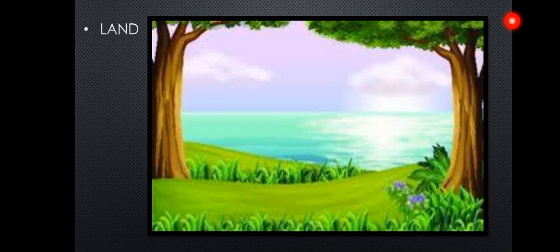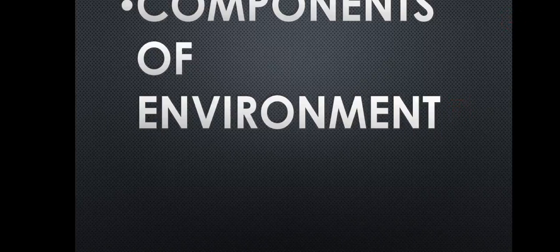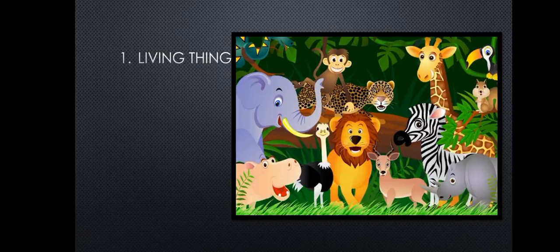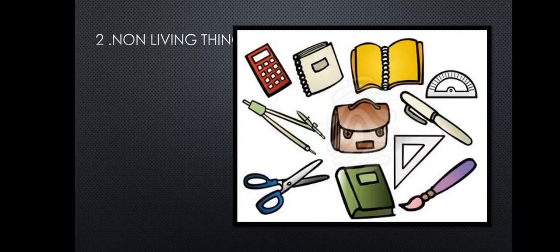The next factor is land. The land is the place where all living organisms live. The environment is composed of different components. The two components of the environment are living things and non-living things. Living things include all the animals, human beings and plants. Non-living things are those which do not eat, which do not breathe and which do not grow. So our environment has two basic components: living things and non-living things in a natural world.